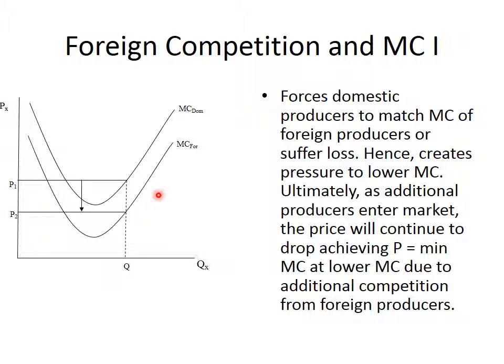So foreign competition creates a situation where the domestic producer can't match that marginal cost and will be forced to drop out. Not only does it cause the allocative efficiency phenomenon of moving prices towards minimum marginal cost, but it also forces marginal cost down to its minimum level. Eventually, domestic producers will have to match the marginal cost of foreign producers.